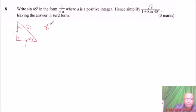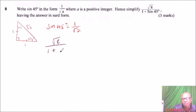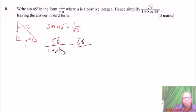We can say sin 45° equals opposite over hypotenuse, which is 1 over root 2. We have expressed sin 45 in surd form. So instead of writing sin 45, we write 1 over root 2. We can then write root 8 divided by (1 + something), replacing sin 45 with 1 over root 2 and simplifying, eventually getting 4 divided by (root 2 + 1).